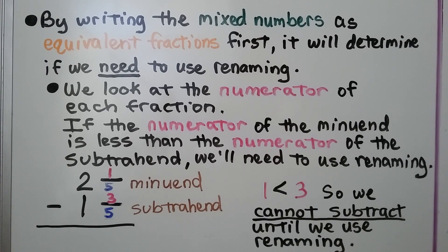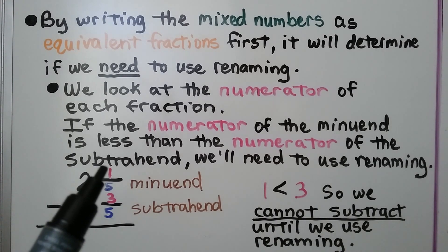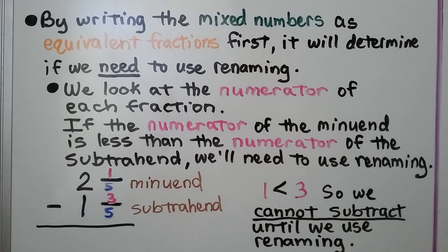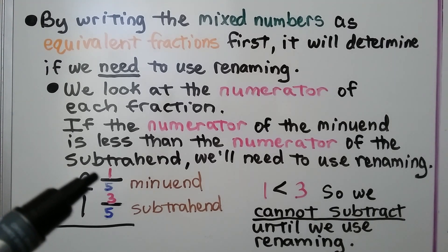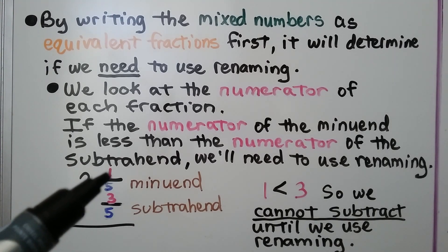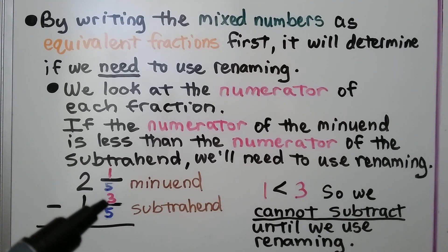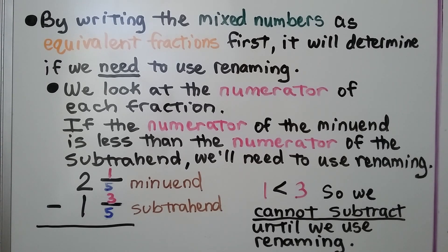We look at the numerator of each fraction. If the numerator of the minuend is less than the numerator of the subtrahend, we'll need to use renaming. And 1 is less than 3, so we cannot subtract until we use renaming.